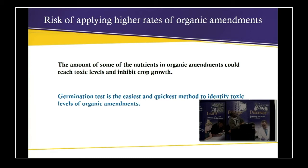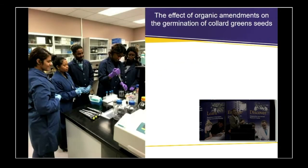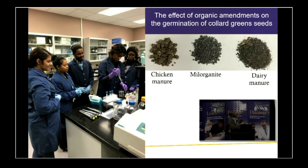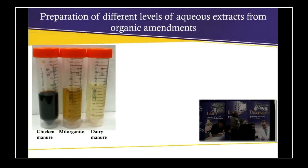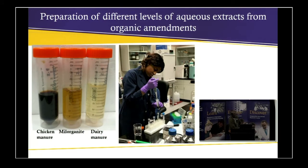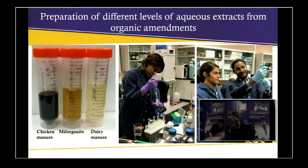To avoid toxicity, we do germination tests to find out the optimum rates to apply. The germination test is the easiest and quickest method to identify toxic levels of organic amendments. We prepare one gram each of chicken manure, Milorganite, and dairy manure, add it into a test tube, add 10 milliliters of water per gram, shake for one hour, filter, and prepare an extract. We then dilute these extracts to create different concentrations for the germination test.